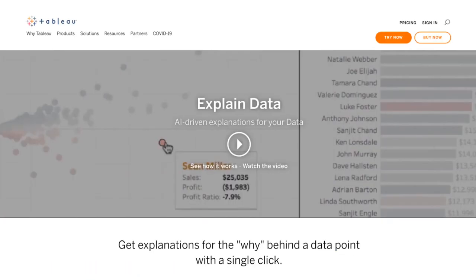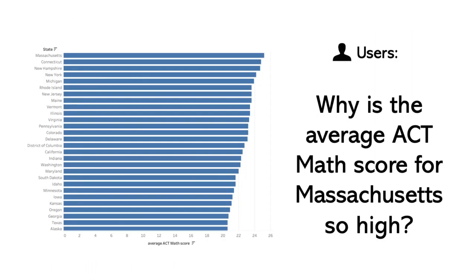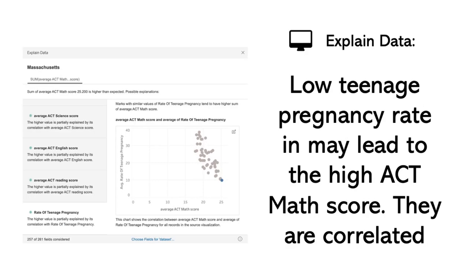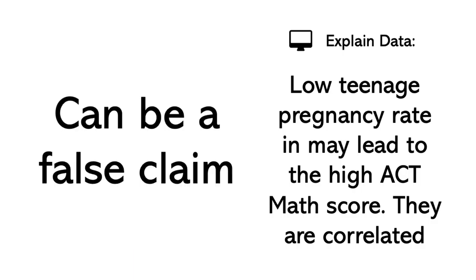Here is Tableau Explained Data. With Explained Data, users can ask why there is an extreme observation in their data. Explained Data will conduct causal inference and provide potential explanations for the extreme data observation. Causal inference from observational data is inherently challenging. There is some chance that the claims made by Explained Data are a false conclusion. If users believe in what the system says, they will misinterpret the data and draw wrong conclusions.